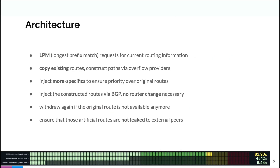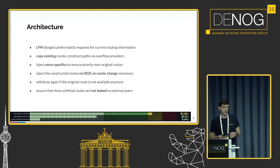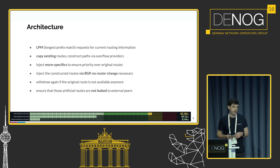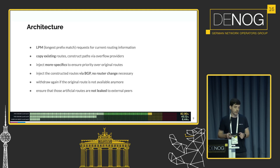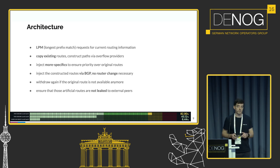How do we solve this? We do longest prefix match lookups to request the current routing information — the active routes and the available routes. Then we copy existing routes and construct paths on our own, via those overflow providers, and inject them with longer prefixes. We inject more specifics because they will always be preferred. We do this via BGP because then no router configuration change is necessary, which takes quite a while.